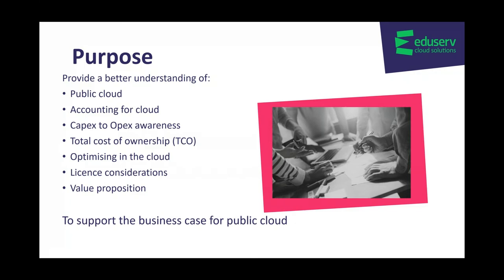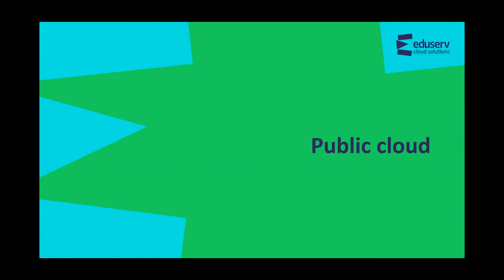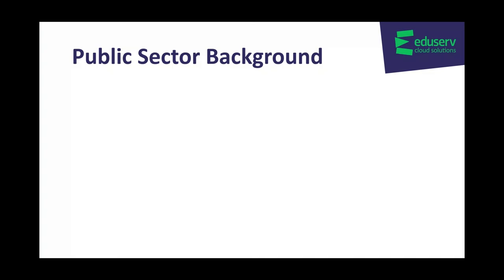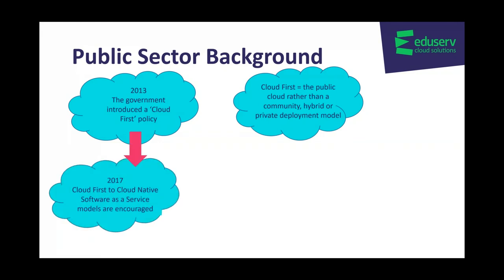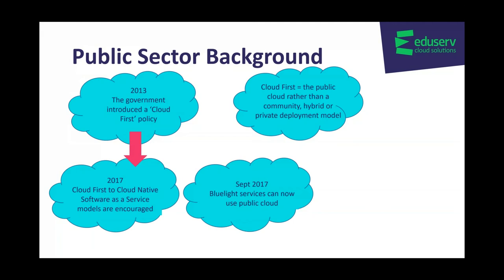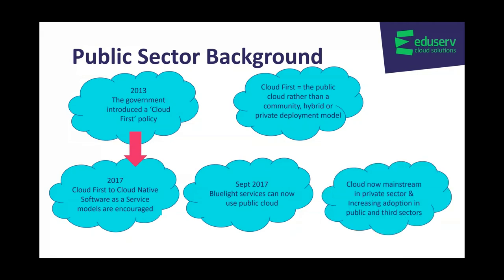Let's start with some background about public cloud. Cloud computing is the on-demand delivery of IT resources and applications via the internet with pay-as-you-go pricing. The government introduced a cloud first policy back in 2013, meaning public cloud. In 2017 the approach turned to being cloud native, so software as a service models were encouraged. Also in 2017, the blue light services were given the green light to move to public cloud, and cloud is now mainstream in private sector with increasing adoption in public and third sectors.